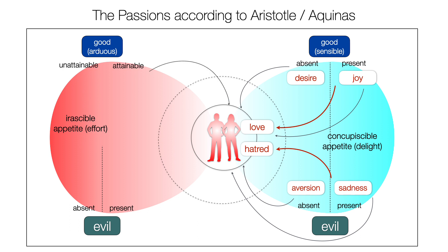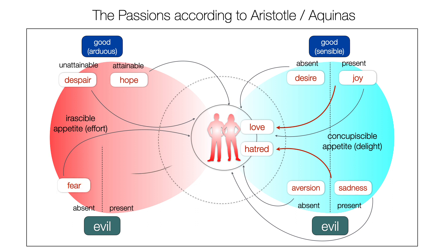Moving to the arduous goods on the upper left: when an arduous non-present good is attainable from our point of view, we develop hope; when it seems unattainable, we feel despair or hopelessness. On the lower part it is a bit more complex. When we consider an absent evil, we can develop fear or daring — two different emotions facing the very same object, depending on the person or on our training and capacity to manage our emotions. When it is present, we can develop anger to face that evil situation or object.